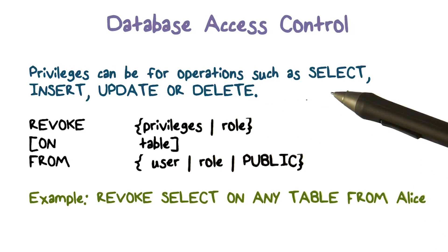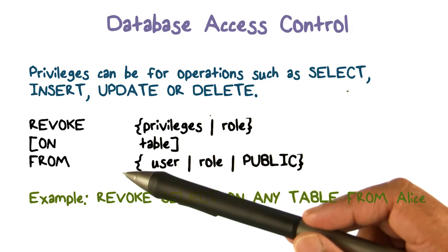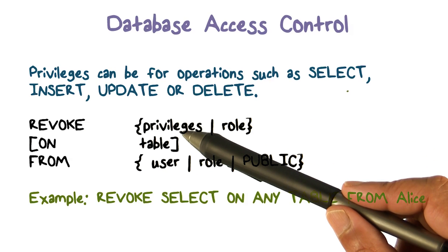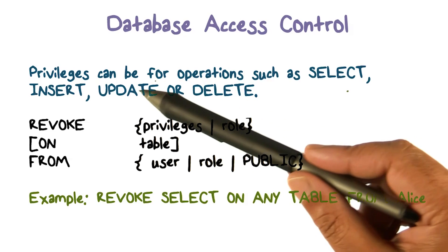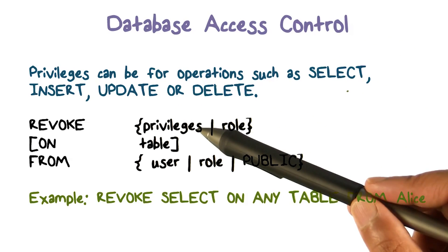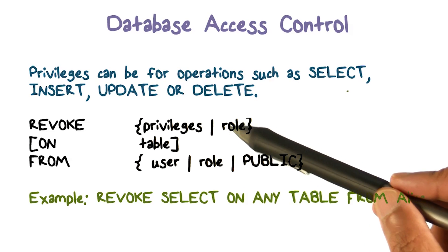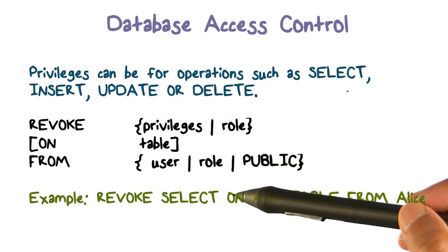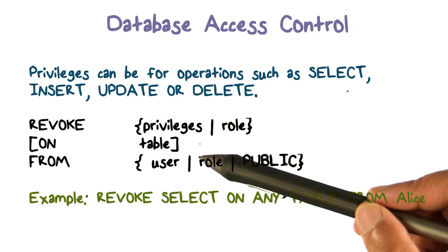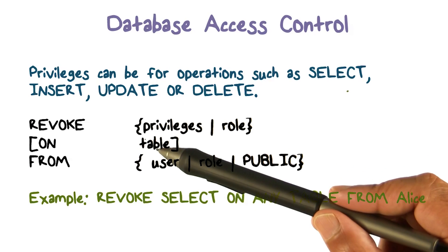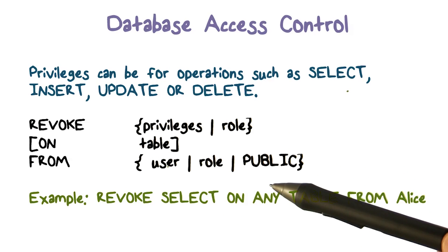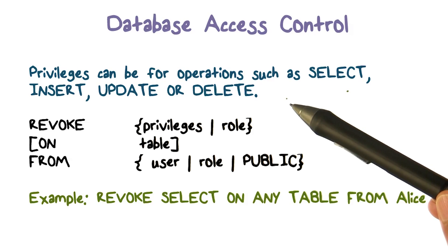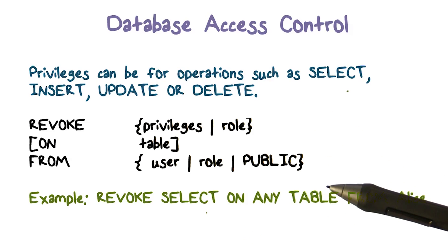The other side of grant is, of course, revoke. Revoking is about taking back a privilege — the example we had was select, but it could be one of the other ones, or the ability to take on a certain role, optionally on a table. You take it from a user, a role, or from everybody. Granting is giving someone access; revoking is taking that access back. An example would be: revoke the select privilege on any table from user Alice. This is how we manage access control in databases.